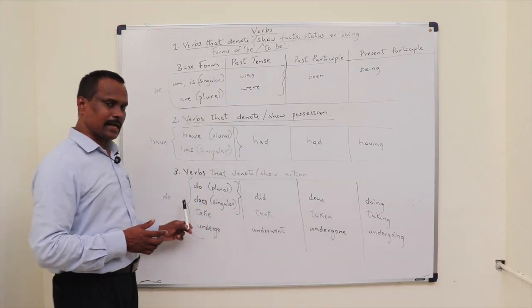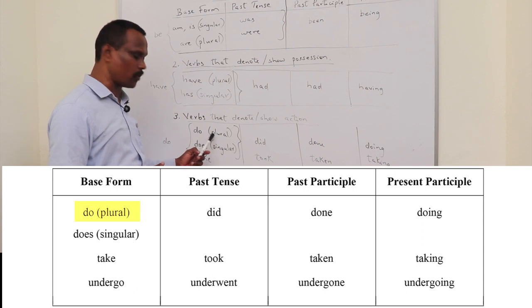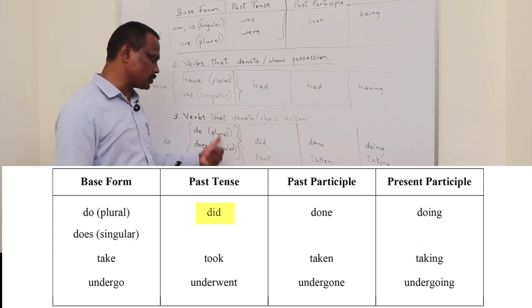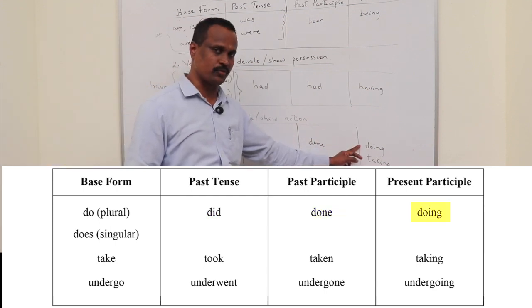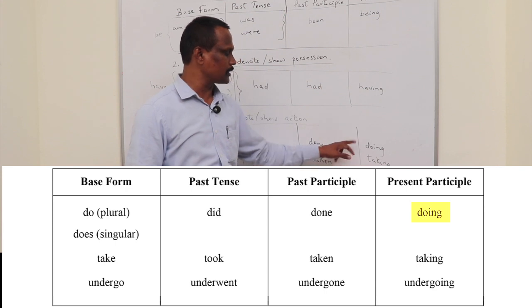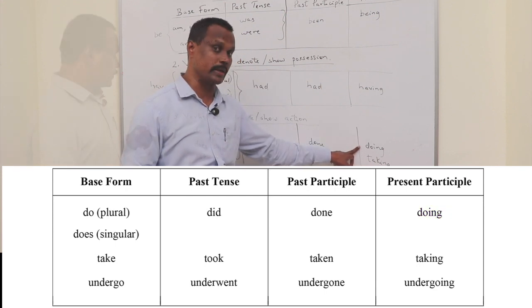Now coming to the third category, that is the verbs that denote or show action. So mainly we discussed this verb that is do, which is in the plural form and does in the singular form. For both, the past tense is did. Past participle is done. And as I said before, for all the verbs, the present participle is the ING form. So here it is doing.